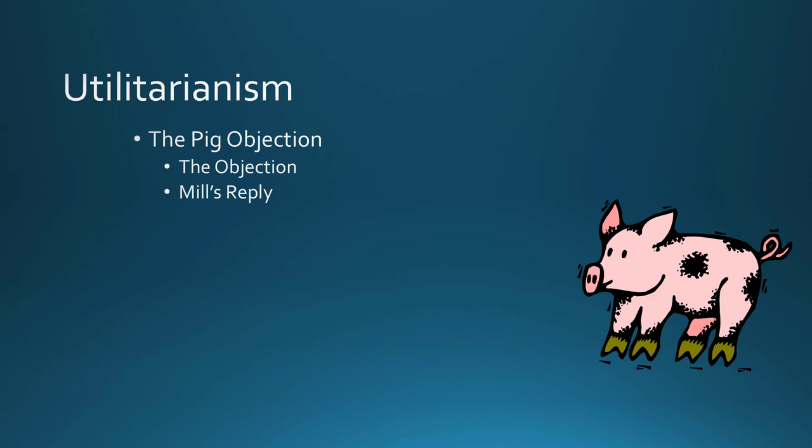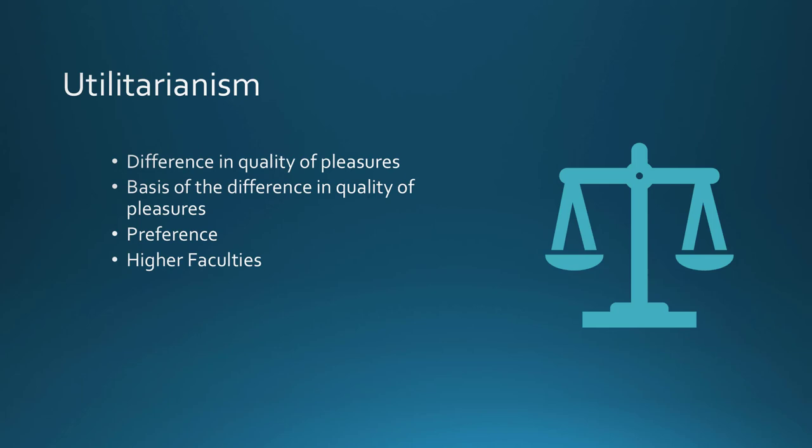So how do you test quality? To say that one pleasure has superior quality over another, one pleasure has superior quality if those competently acquainted with both prefer it to any quantity of the other, even if accompanied by greater discomfort. Suppose you're running a hypothetical test: is the pleasure of friendship greater than the pleasure of drinking alcohol? Mill would say you need someone who's competently acquainted with both.